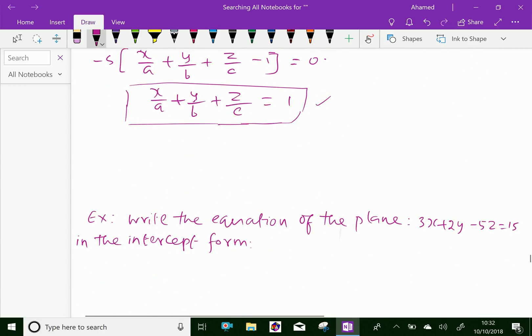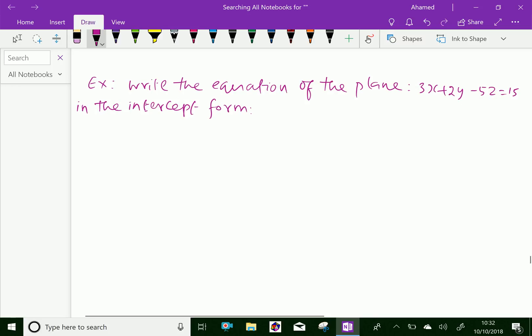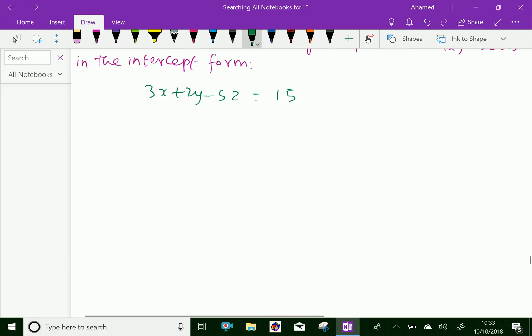Now, let us do an example of this type. Write the equation of the plane 3X plus 2Y minus 5Z equals 15 in the intercept form. First, let us write the equation given: 3X plus 2Y minus 5Z equals 15. The constant is 15, so we have to divide by 15 throughout.